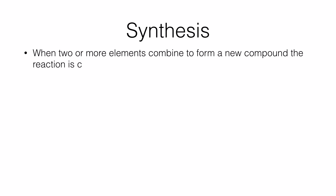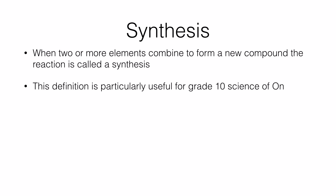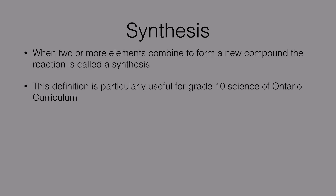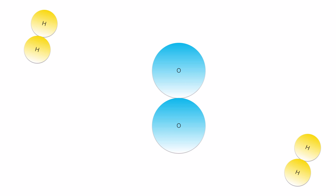Let's look at synthesis first. By definition, when two or more elements combine to form a new compound, the reaction is called a synthesis reaction. This is a definition given in the Ontario curriculum textbooks. Now, here I have an animation for you. If you look at the slide, you will see that there are two molecules of hydrogen and one molecule of oxygen. They are bonded between themselves, so they are of the same kind. If you allow them to undergo a chemical change, this is what would happen — we will get a product in which there are two different elements combining together.